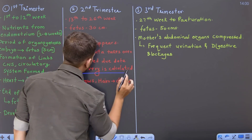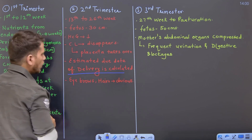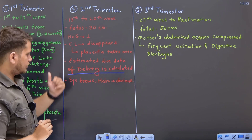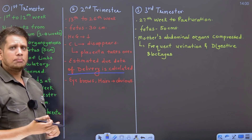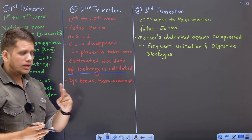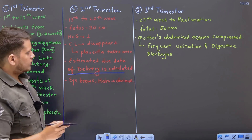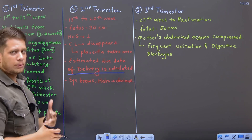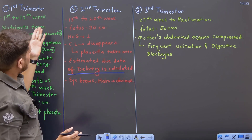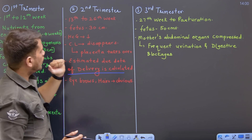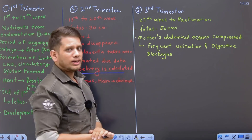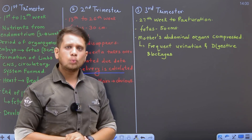Matlab pregnancy kab delivery hogi, yeh aap yaha pe calculate kiya ja sakta hai. Eyebrows ho gayi, bachche ke baal ho gaye, yeh kaafi zhaada evident yaha pe hoti hai. So second trimester aise chalte chalte, approximately 6 months aa gaye hain.